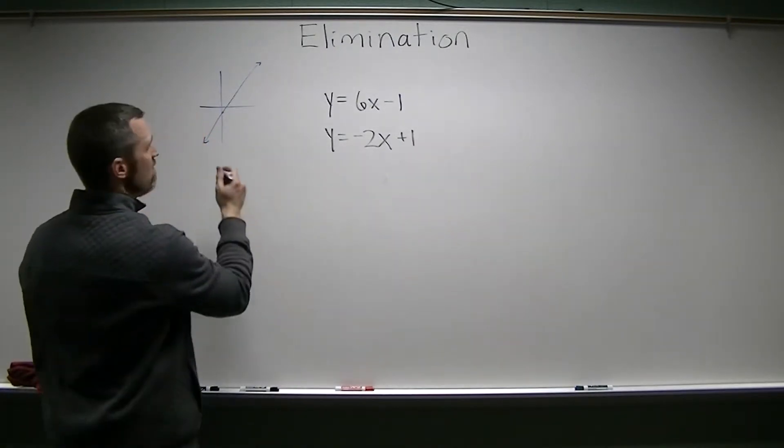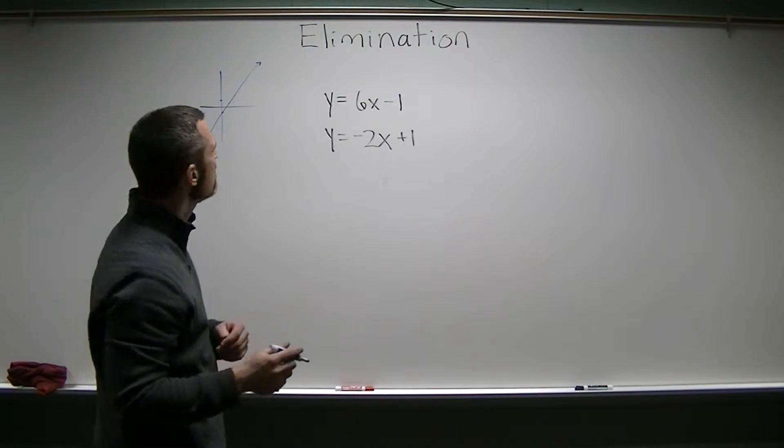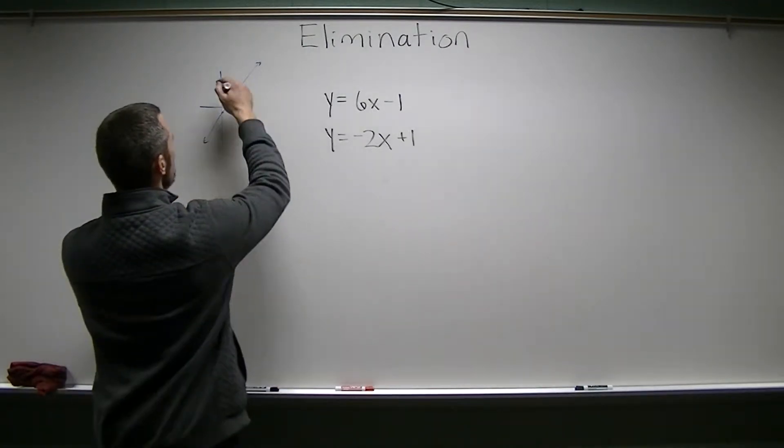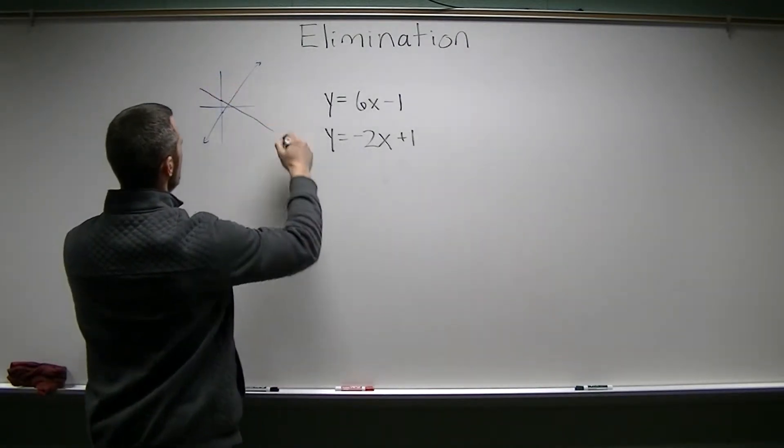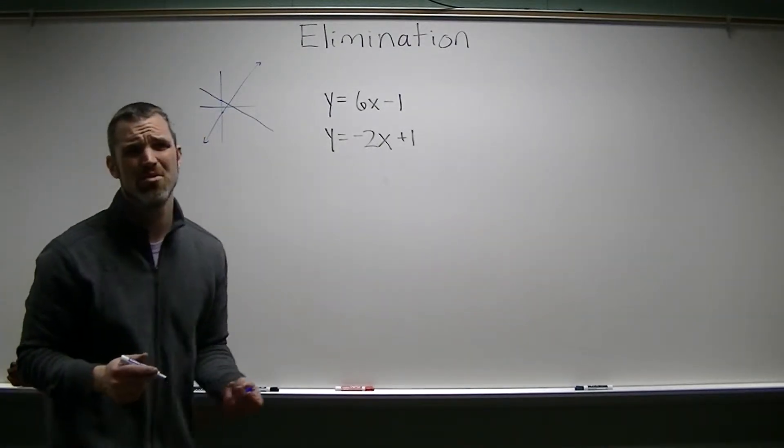This one, I know the y-intercept is at 1, so about the same spacing up top. This is just a quick sketch. The slope's negative 2, so it's nowhere near as steep, but it has to be negative. Something like that? I mean, maybe it should be less steep? I don't know. We'll figure it out.